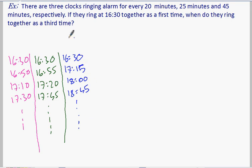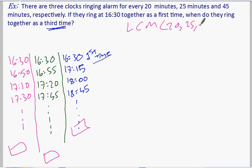So we are looking for what is the third time they ring together. This is the first time. That means we will look for this is going to be like 20, 20, 20. This is 25, 25, 25. This is 45, 45, 45. So we are looking for where will they have the same result, at what part, at what step. So we are looking for which is LCM of 20, 25 and 45.